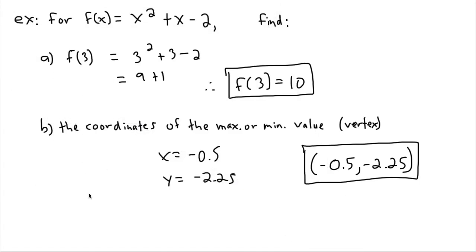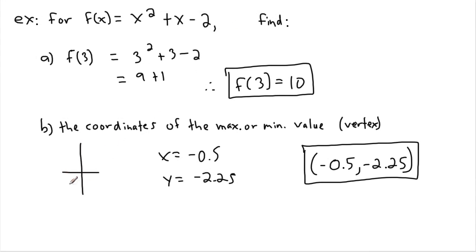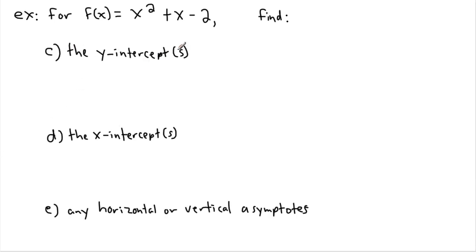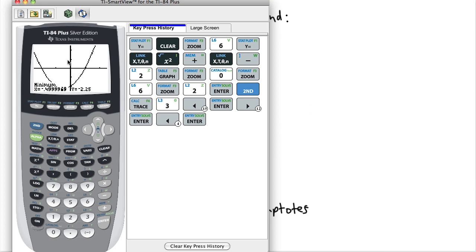The graph goes down and then comes back up, and that point at the bottom is the minimum — that's what we just found. Now let's look at the next part: the y-intercepts. That's where the graph crosses the y-axis.